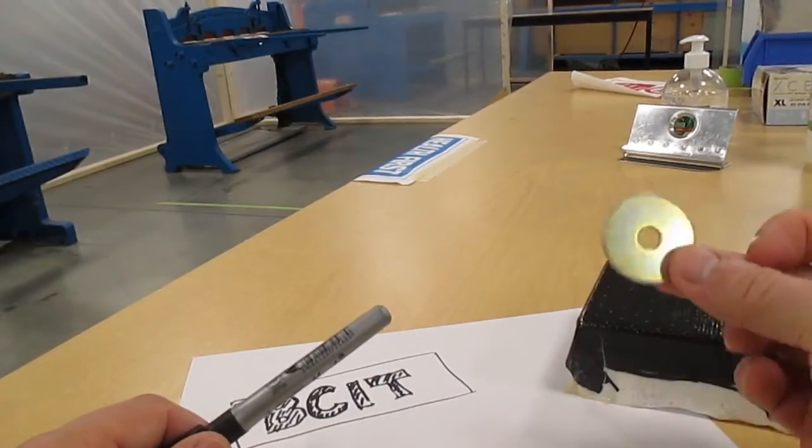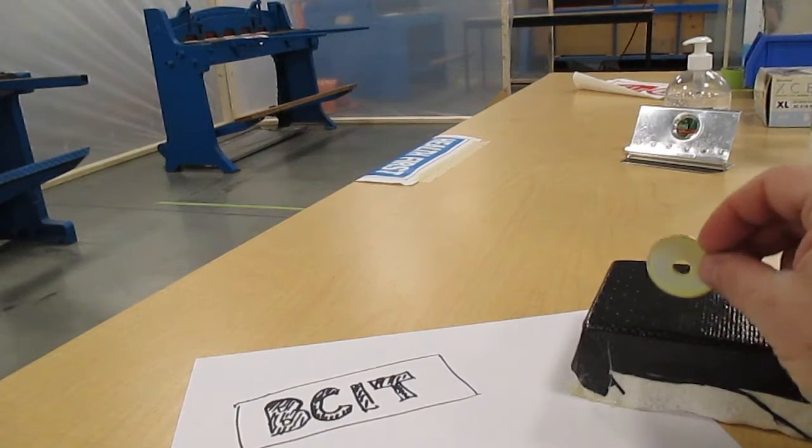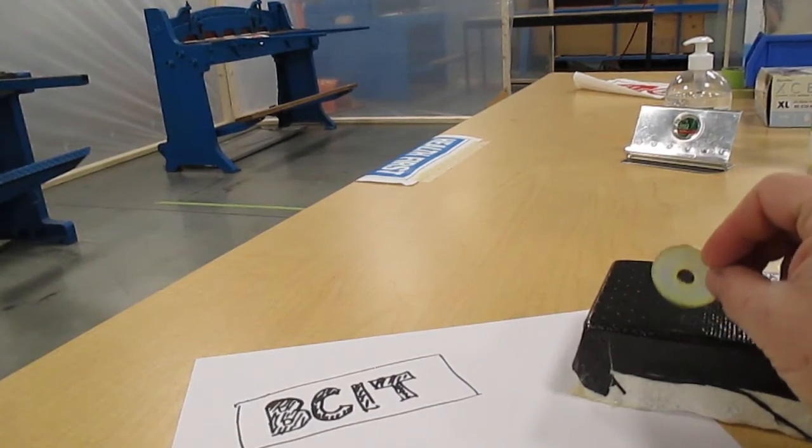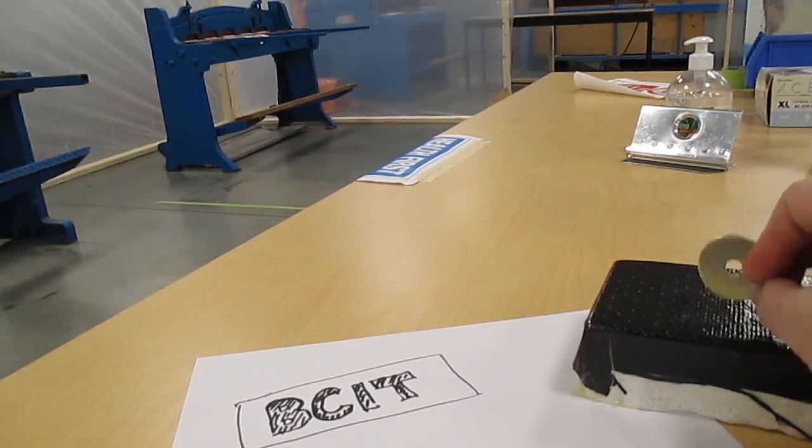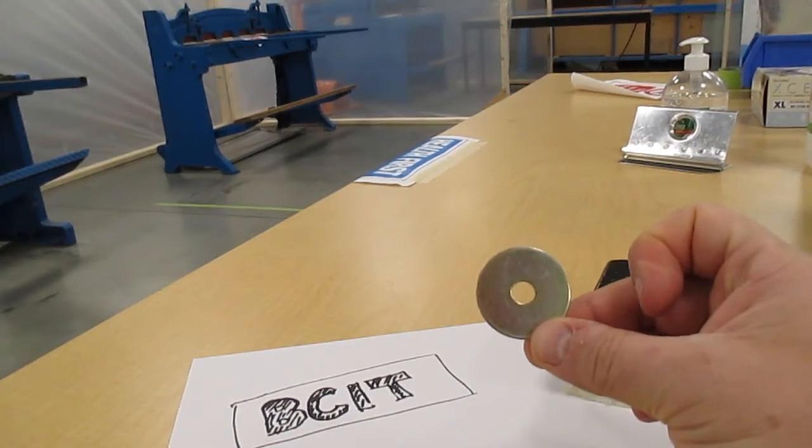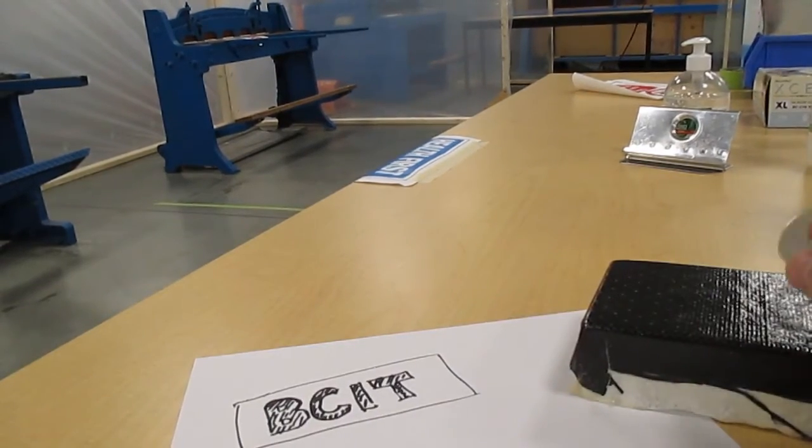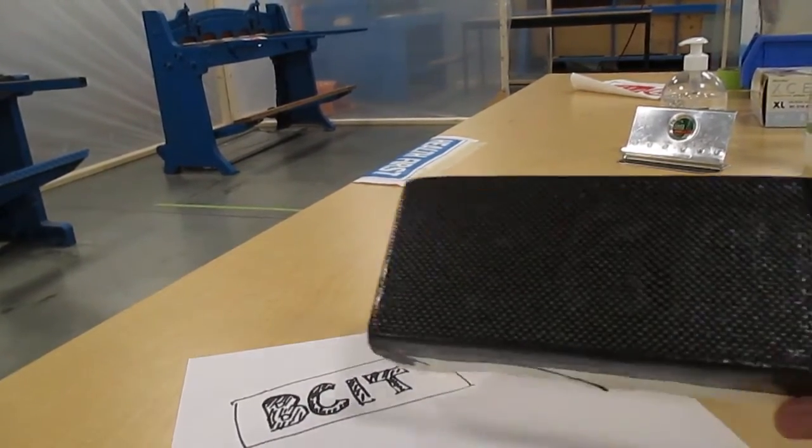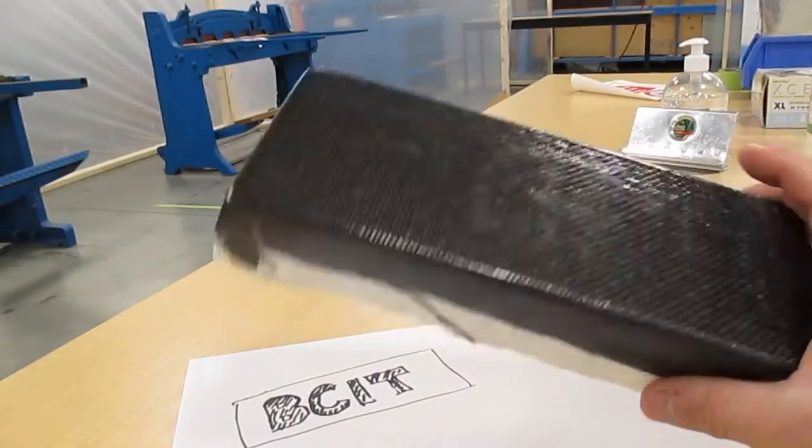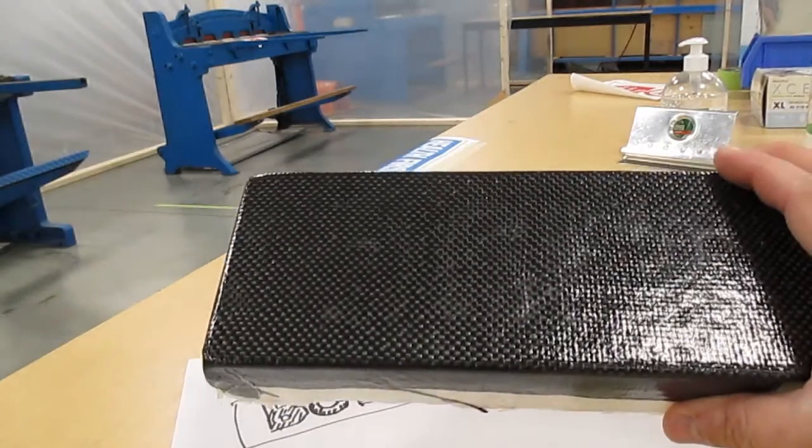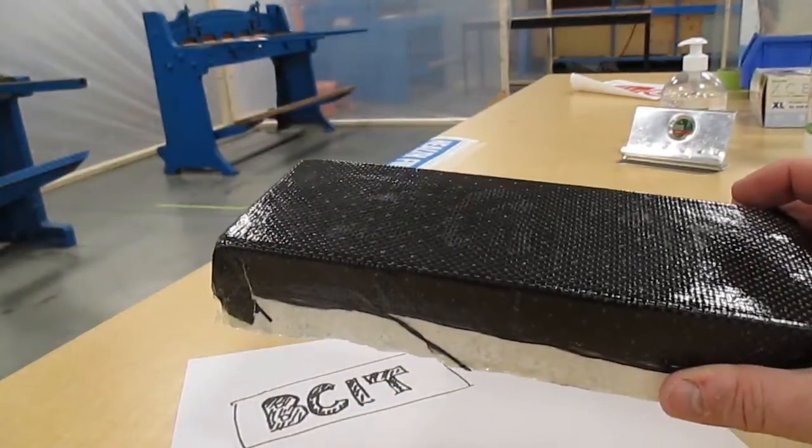And again, you don't even need something as special as the hammer. I can use something as simple as a toonie or a loonie or a penny washer to help me evaluate the condition of that piece of material. So that's the basics of listening for the potential of delamination in an area on a composite component.